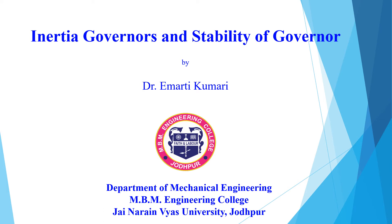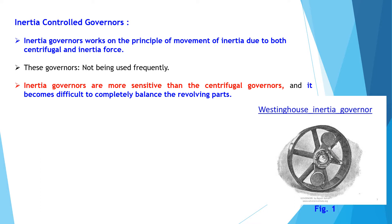Good morning everyone. We have already discussed about the various types of centrifugal governor, for example Watt's governor, gravity controlled governor, and the spring controlled governor. Today we are going to discuss about the inertia governor. The inertia controlled governor works on the principle of moment of inertia due to both centrifugal and inertia force. These governors are not used frequently because inertia governors are more sensitive than the centrifugal governor, and it becomes difficult to completely balance the revolving force of the inertia governor.